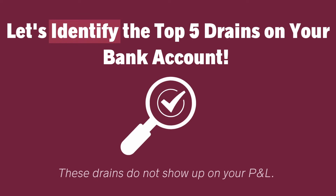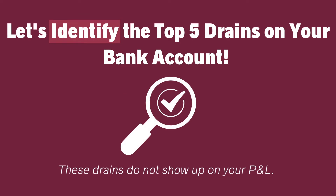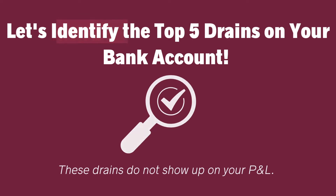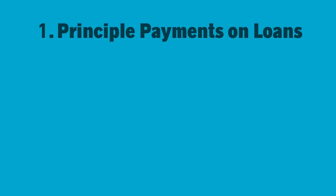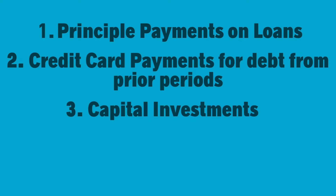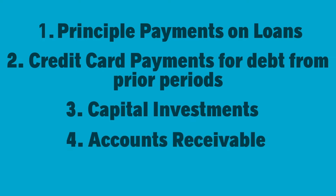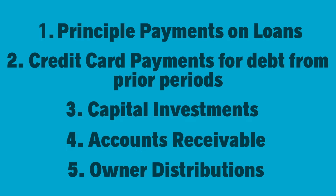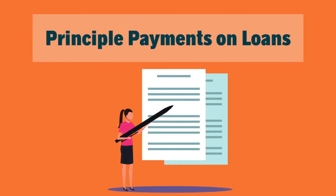The top five drains on your bank account that don't show up on your P&L are: number one, principal payments on loans; two, credit card payments for debt from prior periods; three, capital investments; four, accounts receivable; and five, owner distributions. Let's review them now.